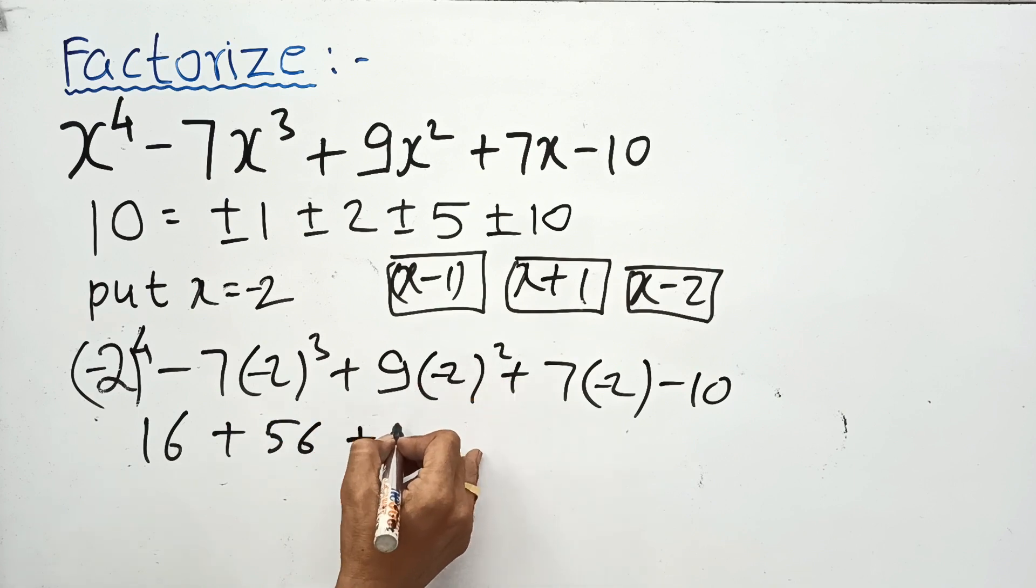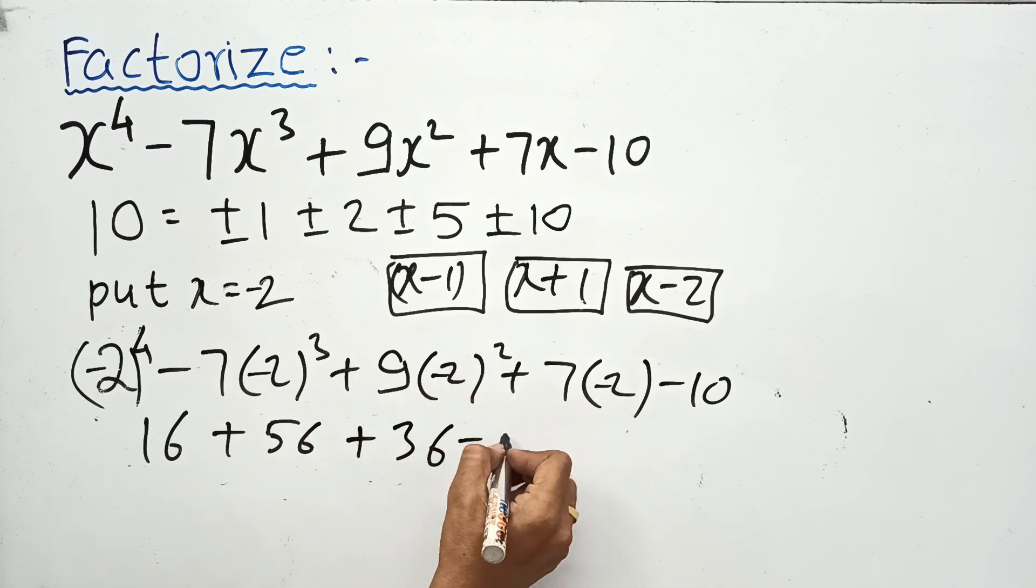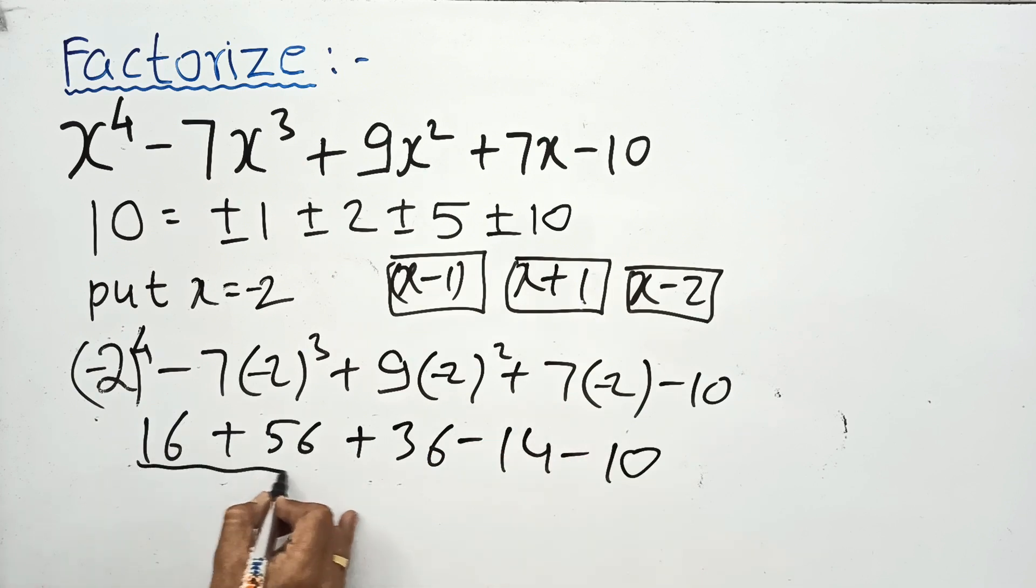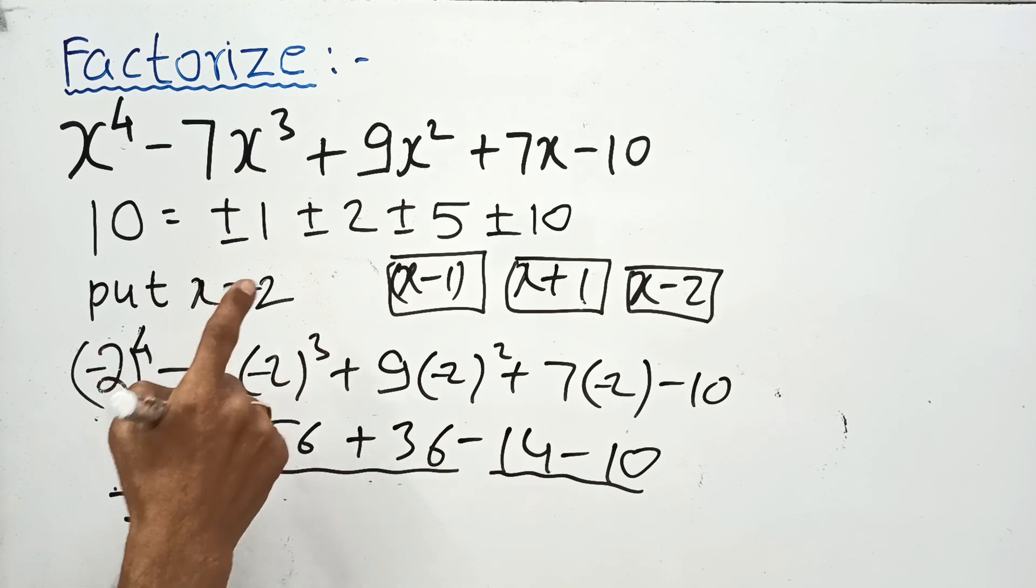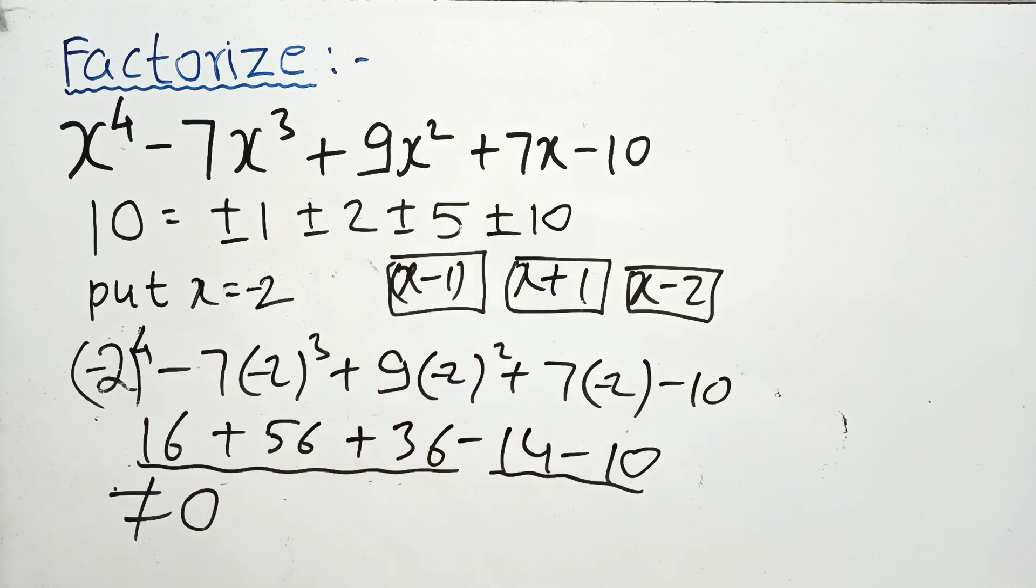We can see without calculation that this is a bigger number. This gives only minus 24, so it will not equal 0. It means x plus 2 is not a factor. Let us move to the next, 5.